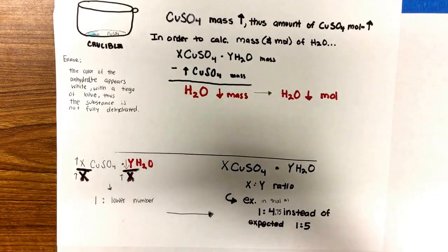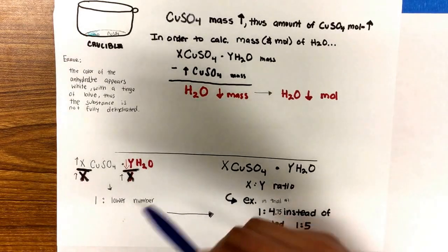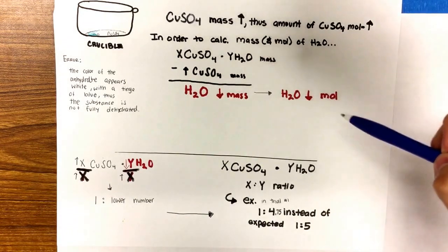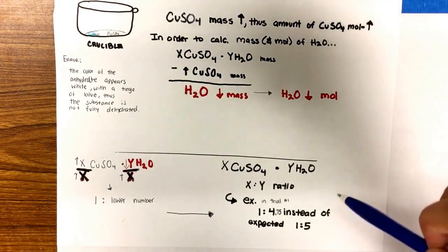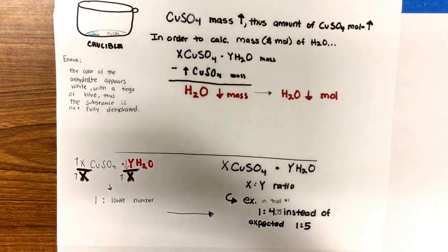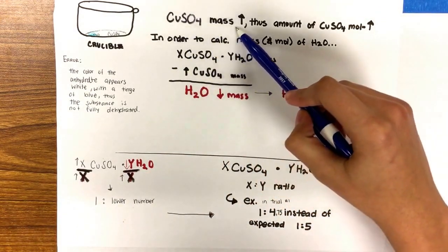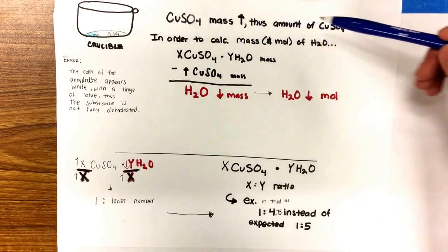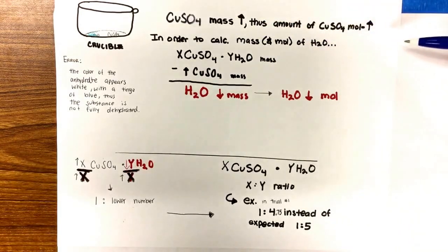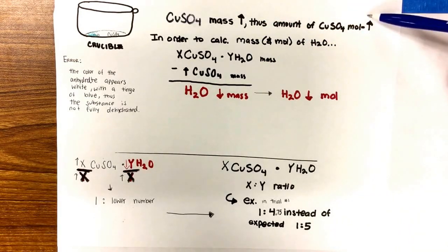A student could have perceived a tinged blue-white substance to be fully dehydrated when in fact it was not. Therefore, the CuSO4 mass, which is the dehydrated substance, would have been increased and therefore the amount when converted to moles would be increased.